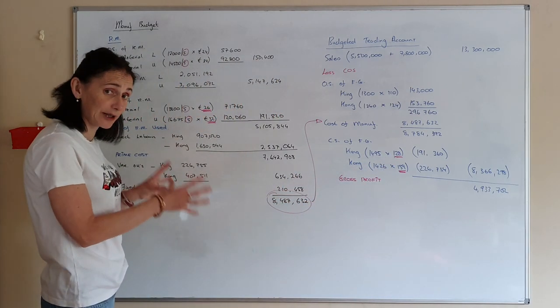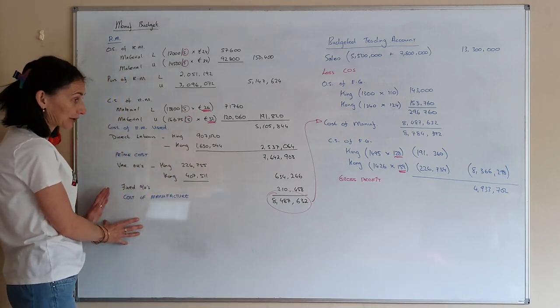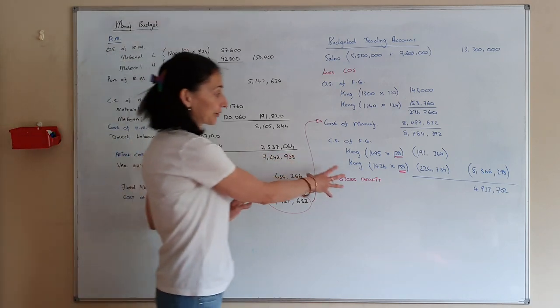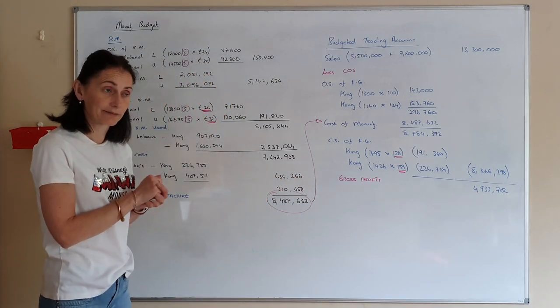So this is really only for the honours. You're going to have to present it in your manufacturing account, and then you're going to have to show it in your budgeted trading account.